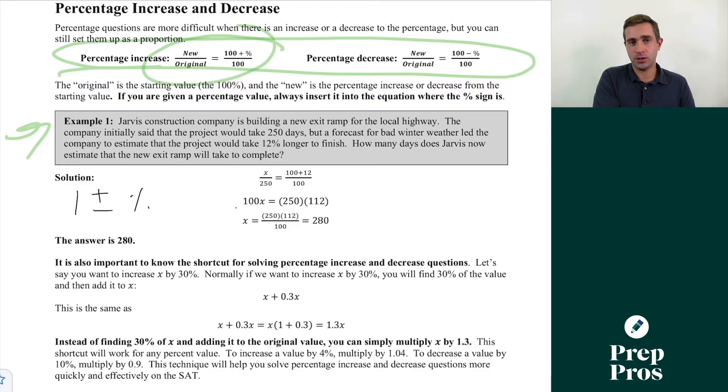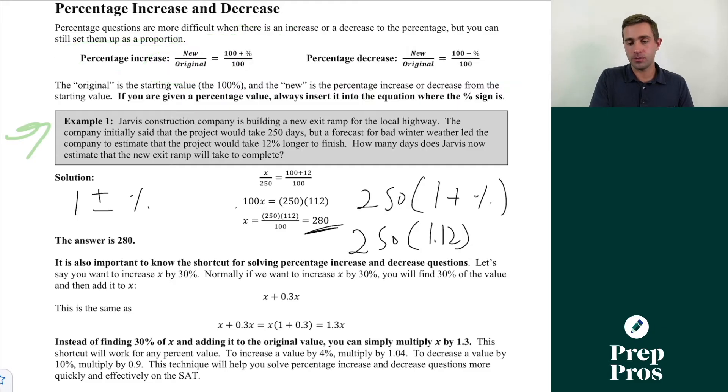If we're applying that percent increase, we're going to be multiplying. If we're undoing it, we're going to be dividing. Since we are applying the percent increase because we know it originally was going to take us 250 days, and it's now going to take 12% longer, we simply can do 250 times 1 plus our percent expressed as a decimal. So this is going to be the same as 250 times 1.12, and that's going to give us our answer of 280.